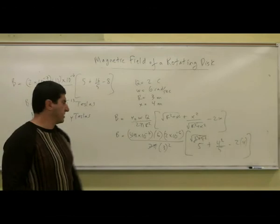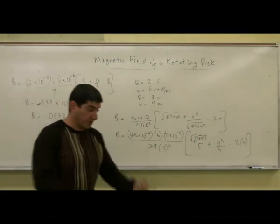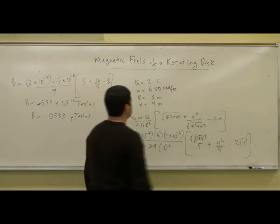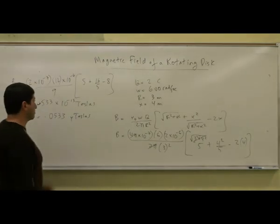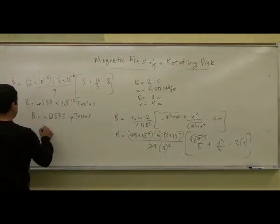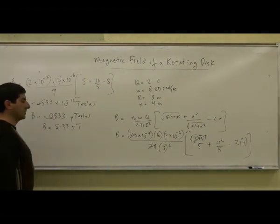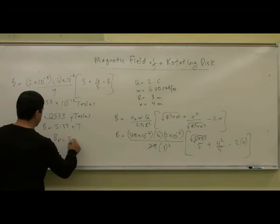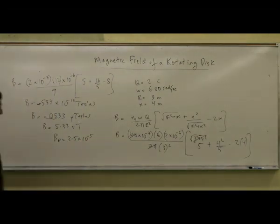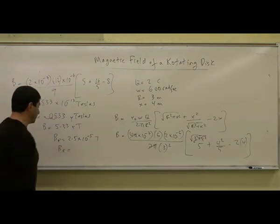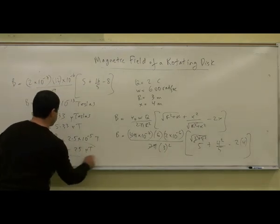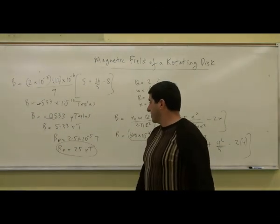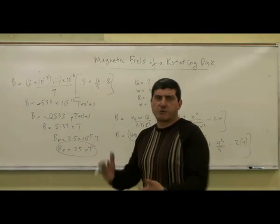That's similar to the magnetic field of the Earth — kind of in the right range. If we want to make it even stronger and actually noticeable, I can have a charge spinning with omega at 600 radians per second. That's really, really fast. That's going to increase this to 5.33 microteslas. The magnetic field of the Earth is 2.5 times 10 to the minus 5 teslas, which means 25 microteslas. So 5 microteslas is one-fifth the strength of the Earth's magnetic field, and the compass will pick that up.